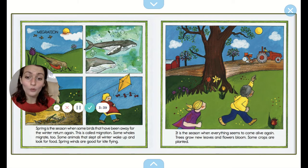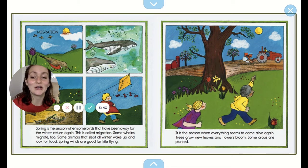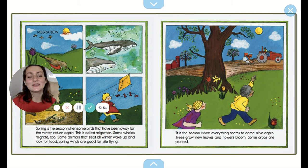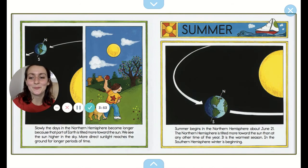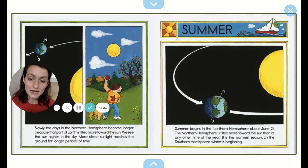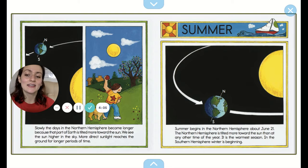Some animals that slept all winter wake up and look for food. Spring winds are good for kite flying. It's the season when everything seems to come alive again — trees grow new leaves and flowers bloom, and some crops are planted. Slowly, the days in the northern hemisphere become longer because that part of the earth is tilted more toward the sun. We see the sun higher in the sky, and more direct sunlight reaches the ground for longer periods of time.